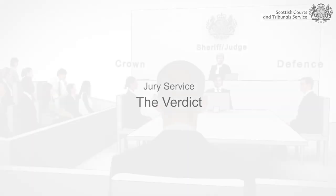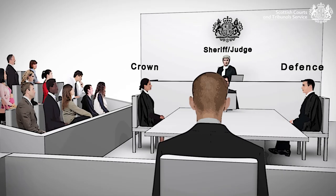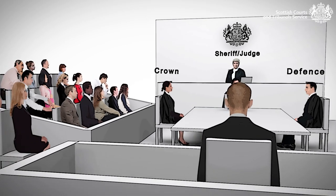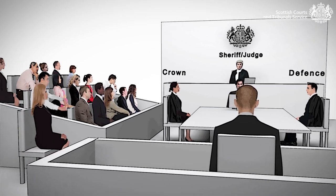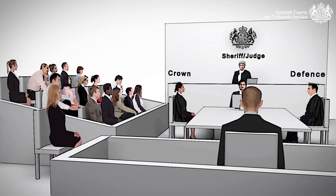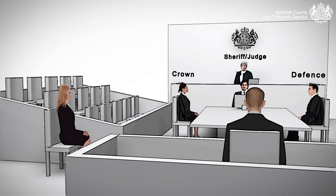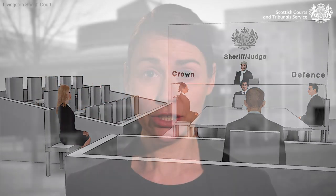Once the evidence has been completed, the Crown, defence and the judge will make statements to the jury, and you will then leave the court and enter the jury room. In the jury room, you will select a jury spokesperson and discuss the evidence and arrive at a verdict.